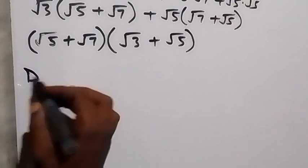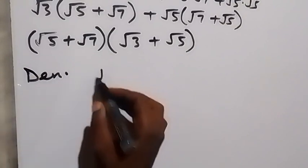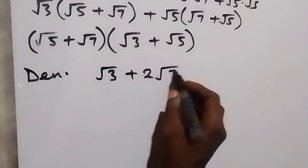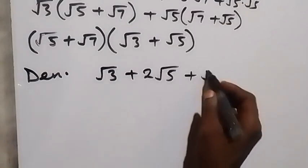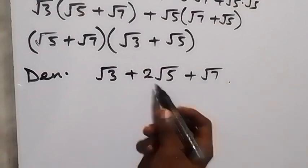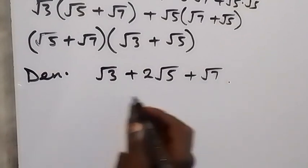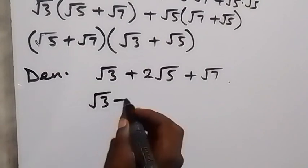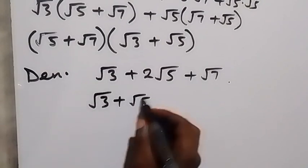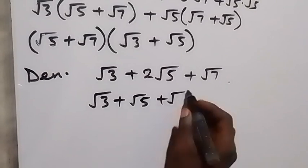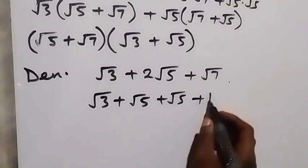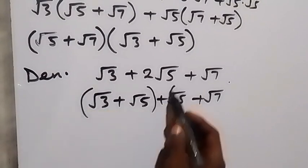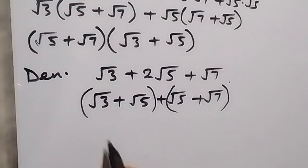For the denominator, we have √3 + 2√5 + √7. Here we can separate 2√5 as √5 + √5, and this will become √3 + √5 + √5 + √7. When we group this two and two like this, we have the denominator simplified.